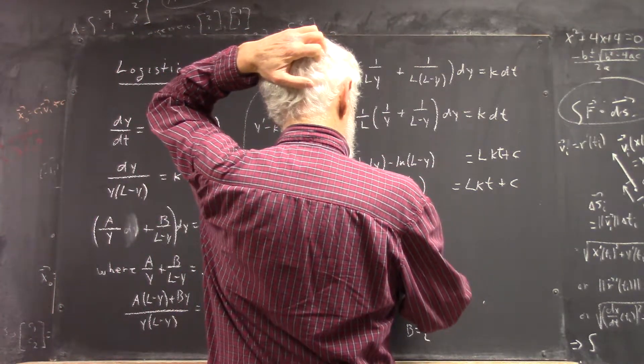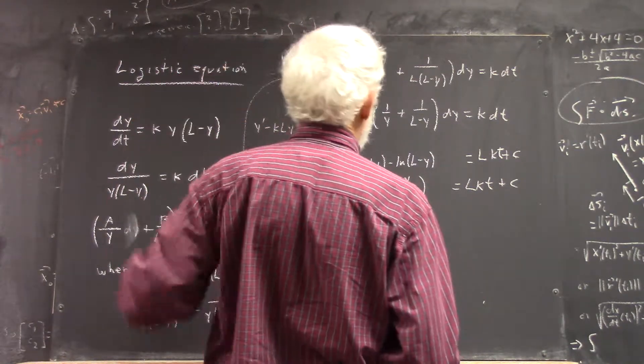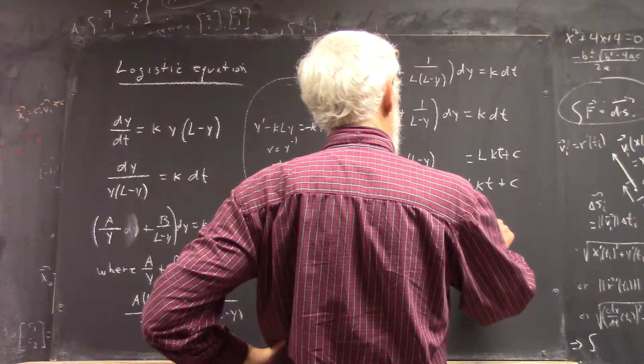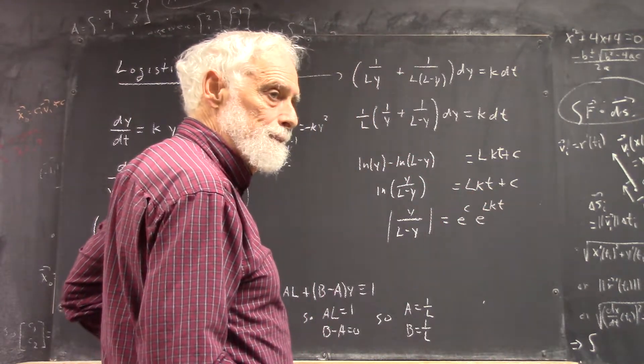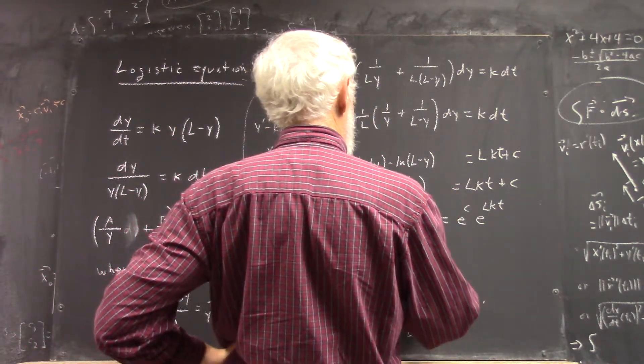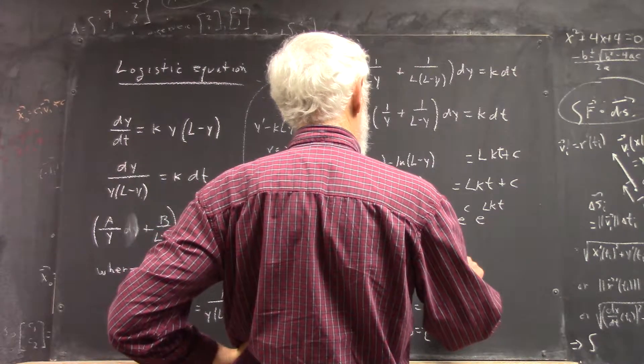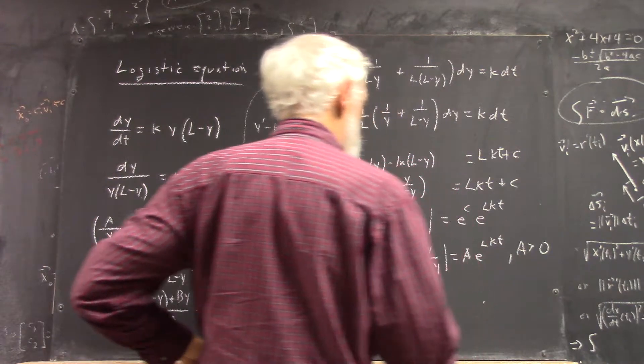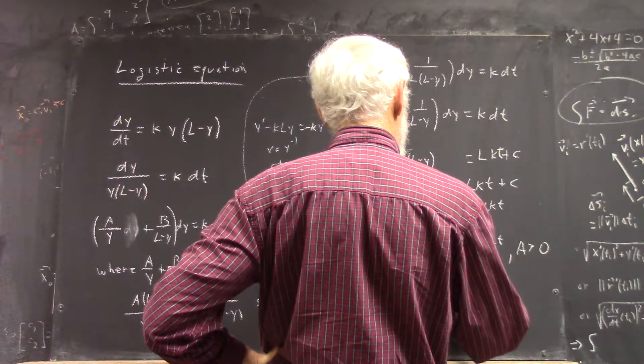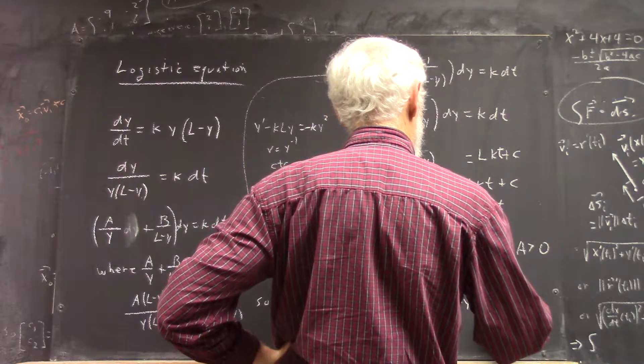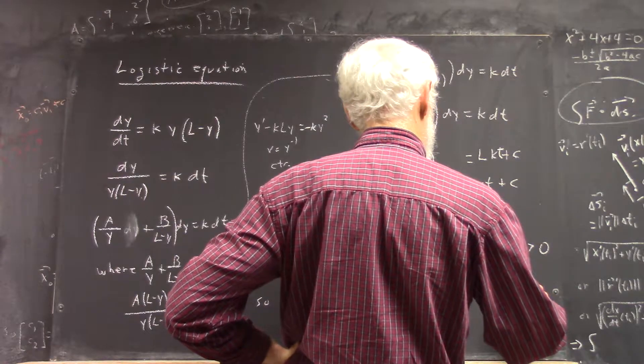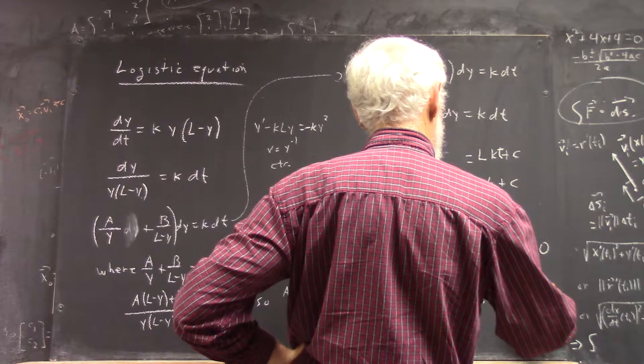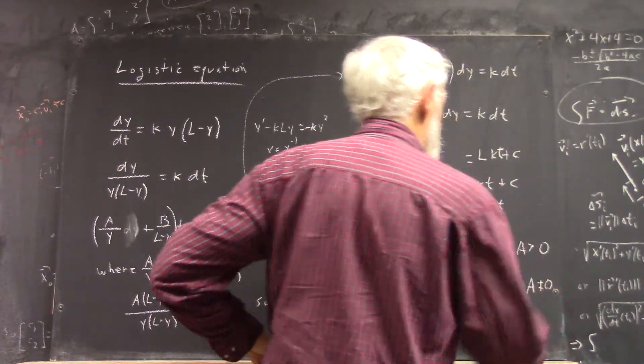Which means that y over L minus y, absolute value thereof, equals e to the c, e to the Lkt. Okay? So that the absolute value of y over L minus y equals A e to the Lkt. I've done this before, and this is the last time I'm going to go through the detail, but you have to know it. And I'm just going to state it this time. So we have this.